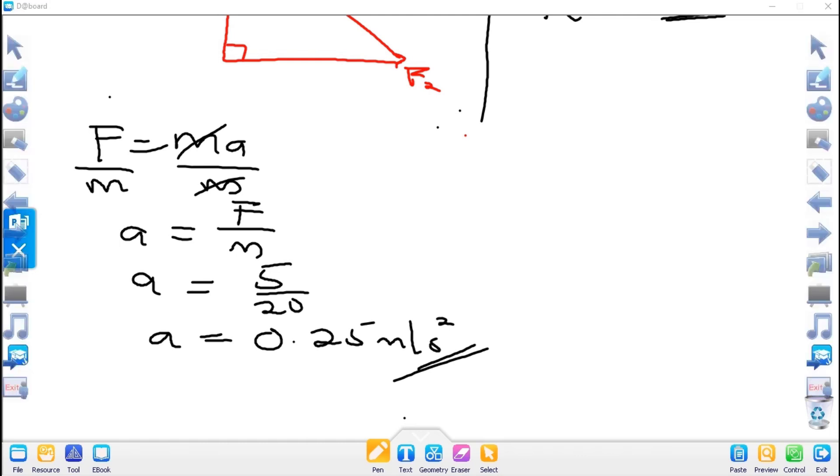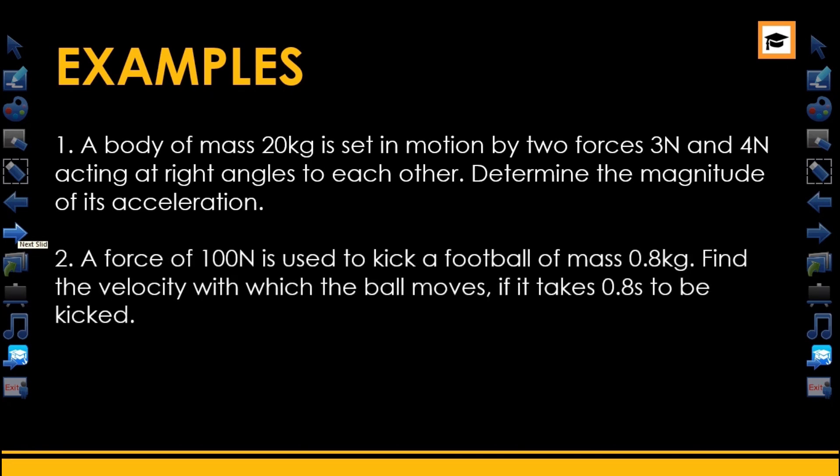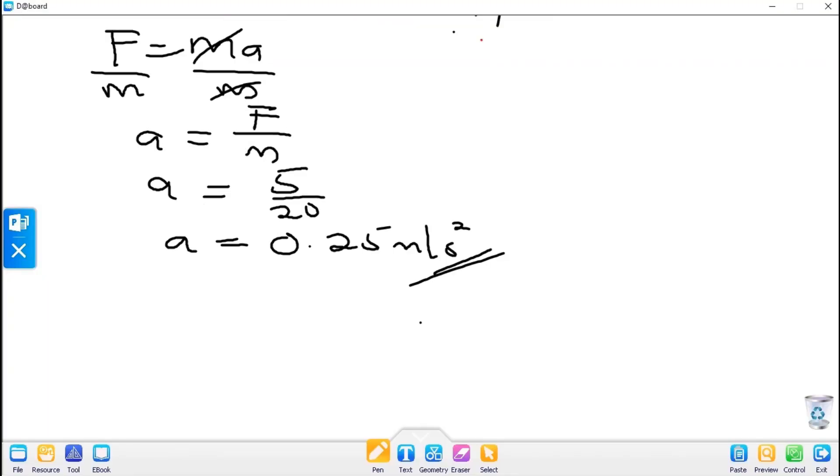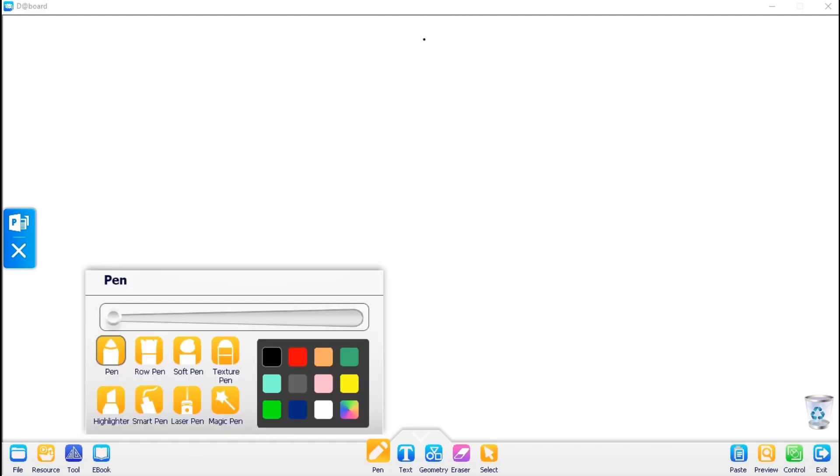Let's take a look at another example. Example 2: A force of 100 Newton is used to kick a football of mass 0.8 kilograms. Find the velocity with which the ball moves if it takes 0.8 seconds to be kicked.